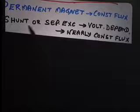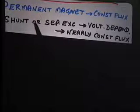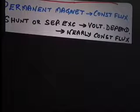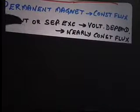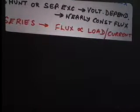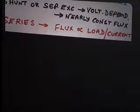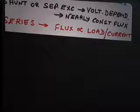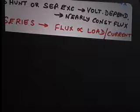That means this is also nearly constant flux, because most of the machines are operated at a near constant voltage. But this excitation is controllable. The shunt or separately excited — you can control the field excitation. The flux is controllable, but you can also maintain it constant. Now let us look at the other one, called series excitation, where the field winding is in series with the armature winding, which means the flux is proportional to load or the current. Here the flux of a machine depends upon the load or the armature current — it is not a constant flux system.